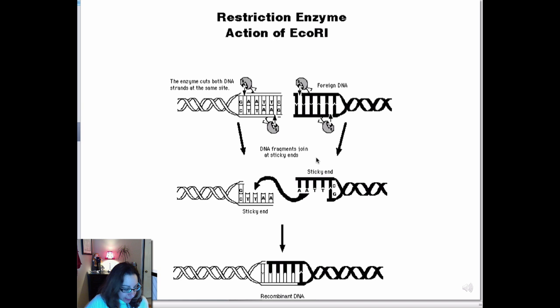So again, ECOR1. ECOR1 is going to recognize the sequence GAATTC, and cut between the G and the A. It's going to leave these nice overhangs, leave this nice sticky end.